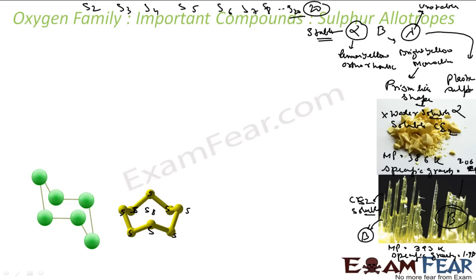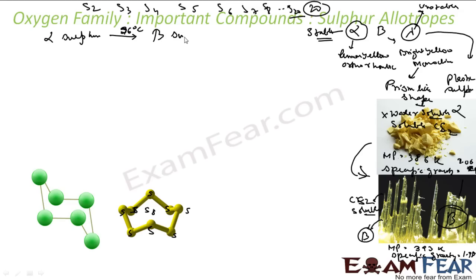To prepare beta sulfur, you start from alpha sulfur. You melt the alpha sulfur in a dish, then cool it until you get a crust. You make a hole in the crust, pour out the remaining liquid, and the colorless needle-like structures that remain are beta sulfur. It is formed from alpha sulfur by heating to 369 Kelvin or 96 degrees Celsius, at which point you get beta sulfur.